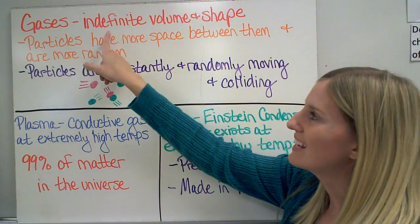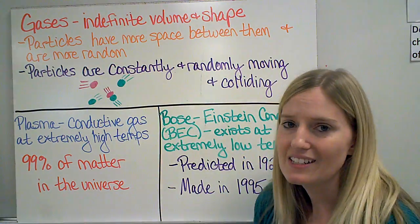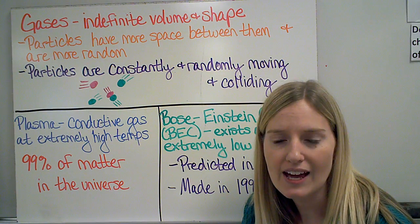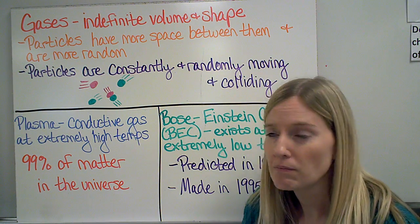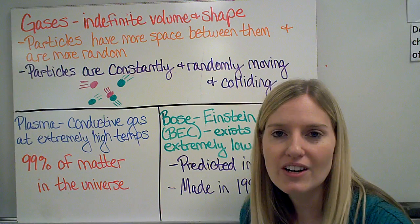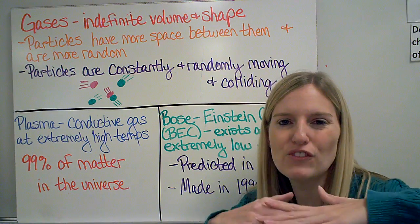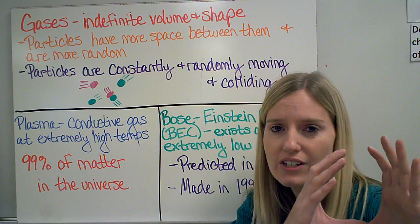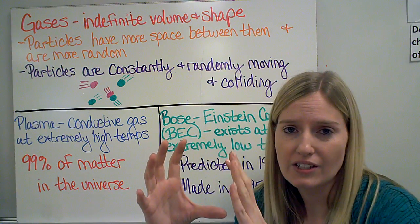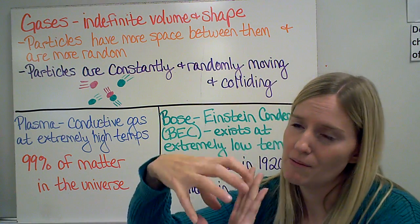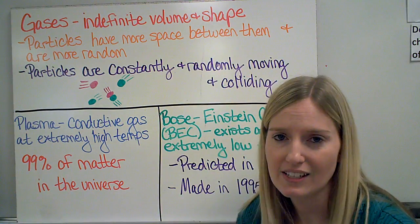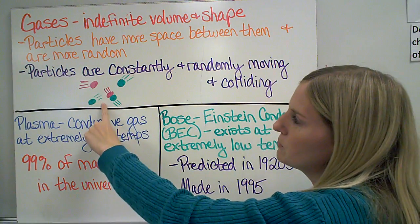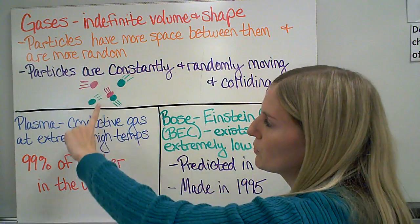Gases have an indefinite volume and an indefinite shape. So depending on what container the gas is in, it will both take the shape of the container and it will fill the container as much as it can. So if I have a gas in a small container and then I put it into a big container, it's going to take up as much of that big container as it can. The particles have more space between them and they are more random.